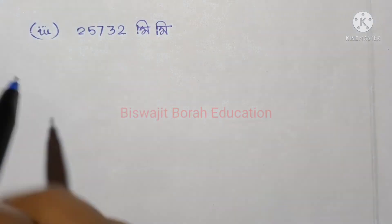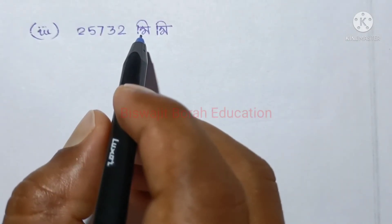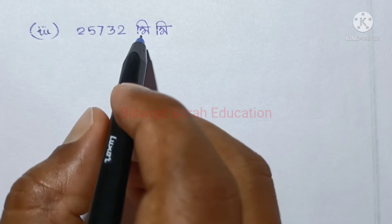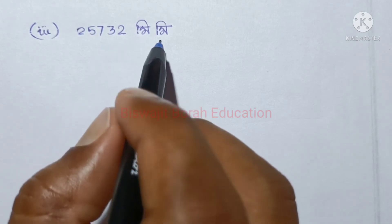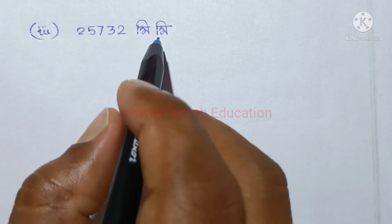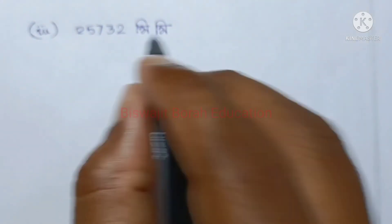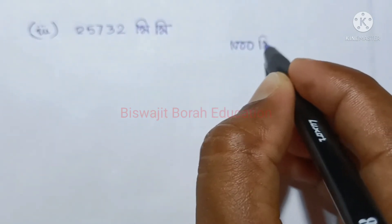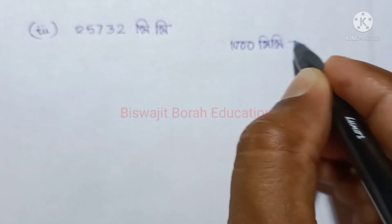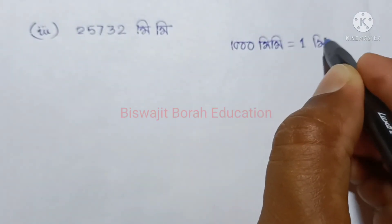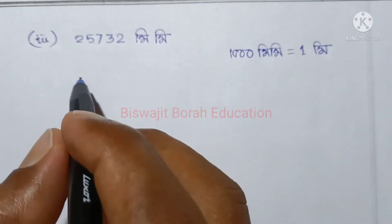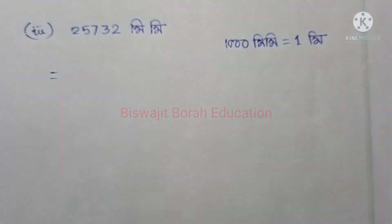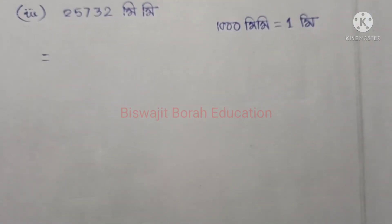So 1 mm is 1 meter in kilometer terms. The number is 25,732 mm. We will work out this meter conversion from here.